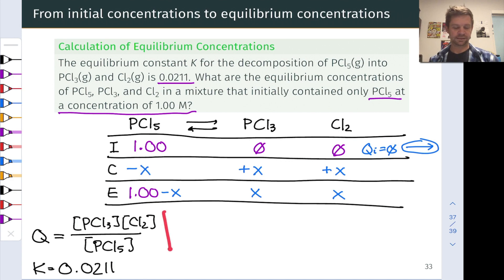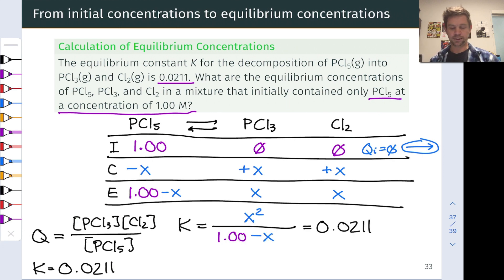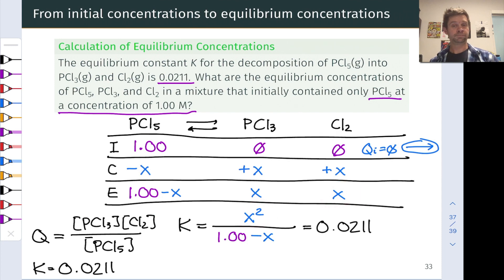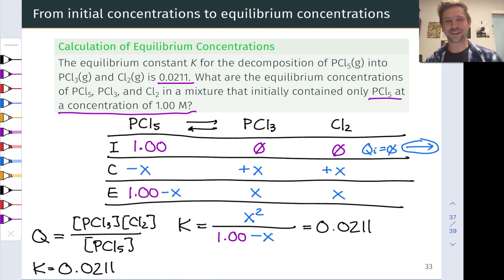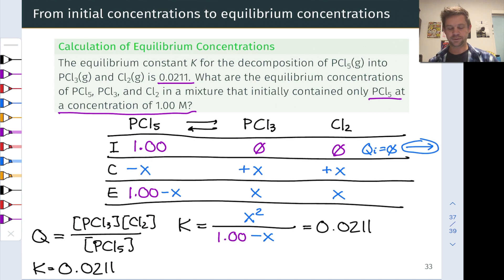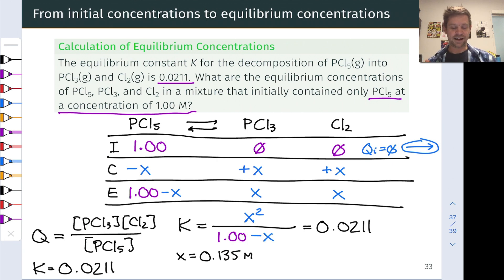We translate this into the equilibrium equation: K equals x² divided by (1 − x), which equals 0.0211. This is a quadratic equation, so we use the quadratic formula to solve for x. I encourage you to pause and try that. The two roots are x = 0.135 mol/L and x = −0.156 mol/L.